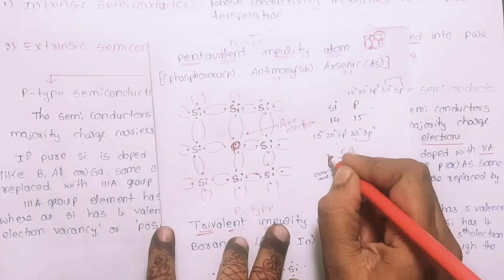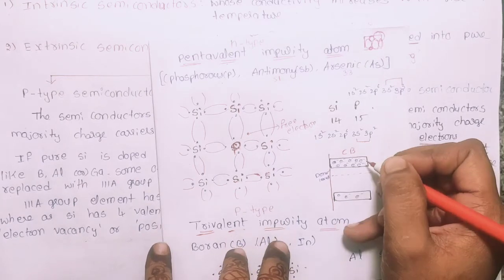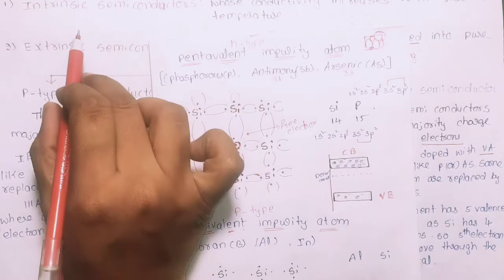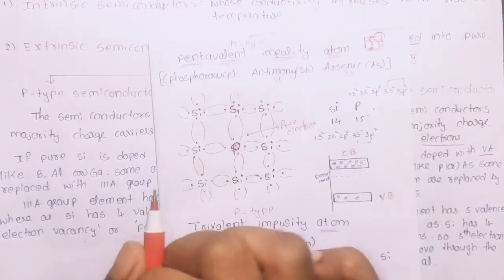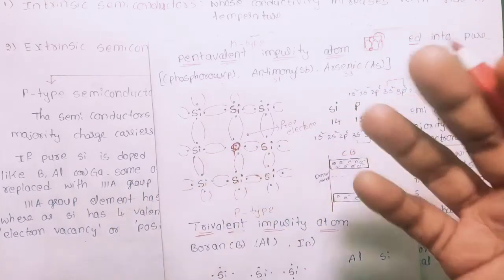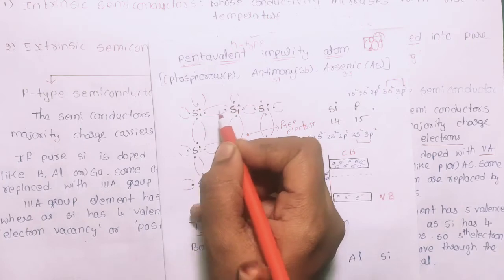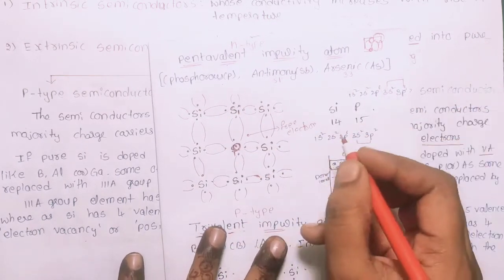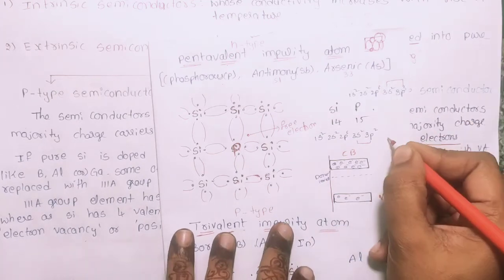Looking at the energy band diagram: in a normal intrinsic semiconductor, a lot of energy is needed to break bonds. But in the N-type semiconductor with the pentavalent impurity, there is a donor level just below the conduction band. Only a small ionization energy is needed to move the free electron into the conduction band.